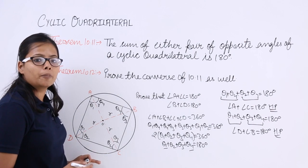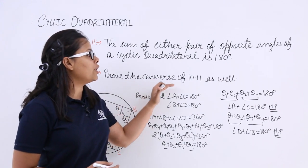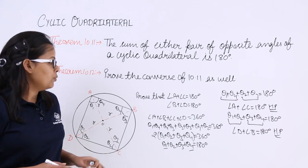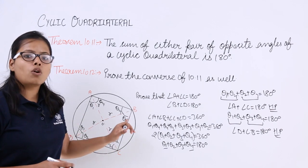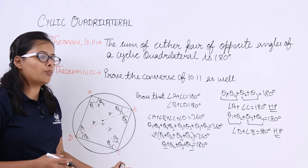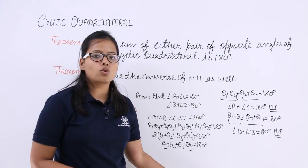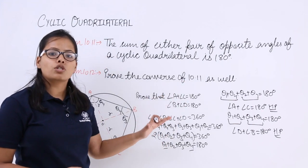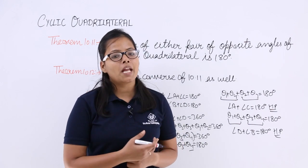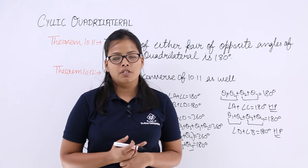Now let's see theorem 10.12, which is the converse of theorem 10.11. The converse means it is the opposite: it is given that the sum of a pair of opposite angles is equal to 180 degrees, and you need to prove that the four points lie on a circle. You just need to reverse the process. I will be taking problems based on these theorems in the next video lecture. Thank you.